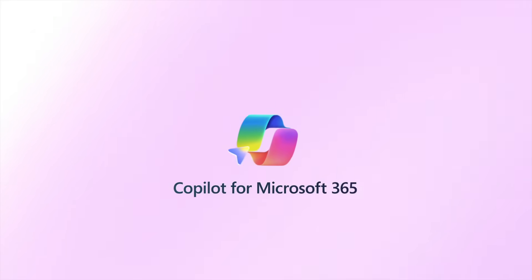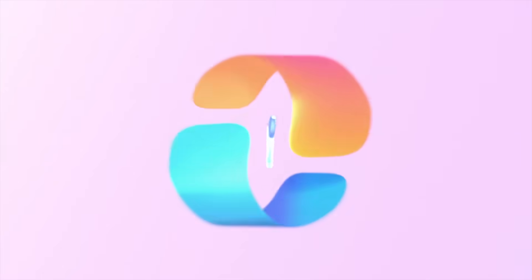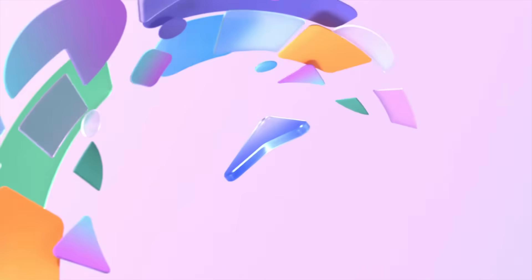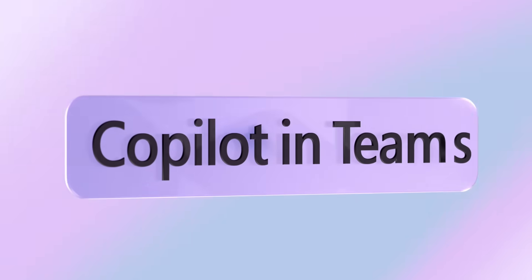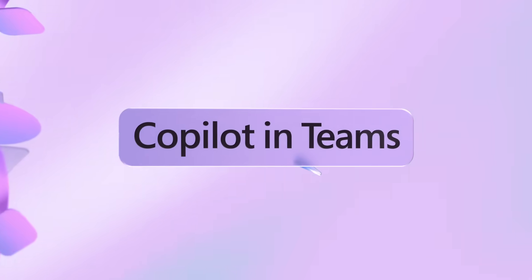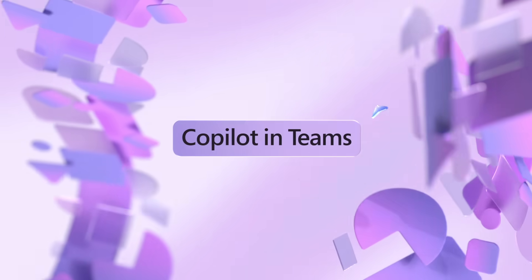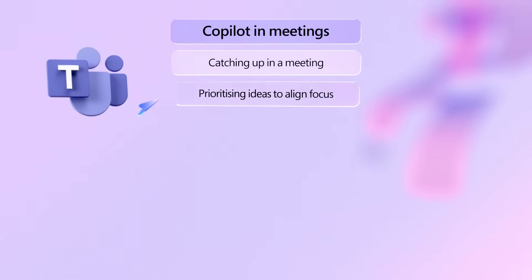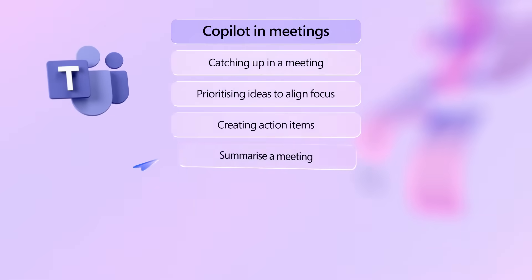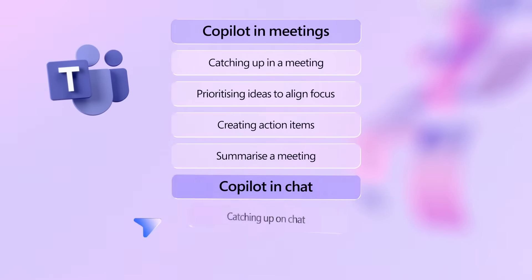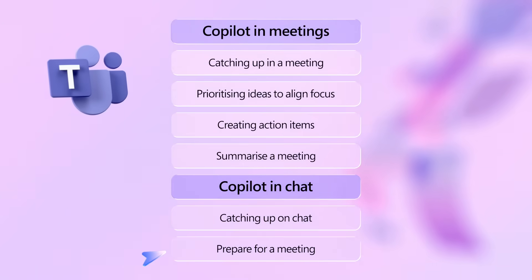Copilot runs in your Microsoft 365 apps to help you work faster and smarter. It uses AI to summarize the content of team meetings and chat, so you can see what needs to be done without scrolling through conversations or replaying meetings. Simply enter prompts in the Copilot chat to put this powerful feature to work.